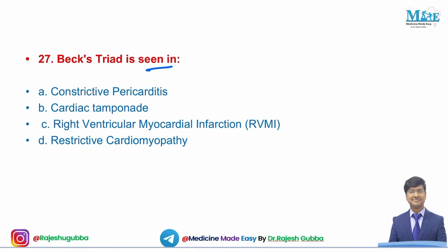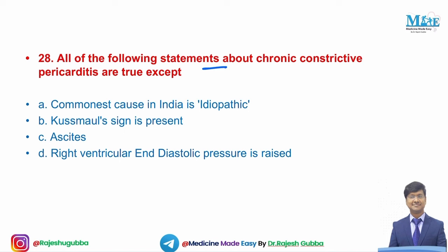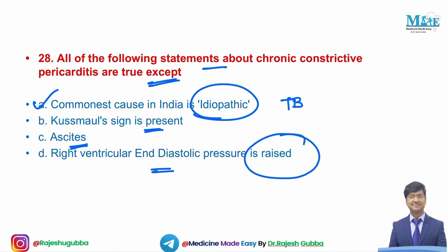Beck's triad — raised JVP, muffled heart sounds, and hypotension — is seen in cardiac tamponade. Next question: all statements about chronic constrictive pericarditis are true except — commonest cause in India is idiopathic, Kussmaul's sign is present, ascites is present, or RV end-diastolic pressure is raised. The incorrect statement is that the commonest cause in India is idiopathic; it is actually tuberculosis. Kussmaul's sign, ascites, and raised RV end-diastolic pressure are all true features. Kussmaul's sign is also seen in restrictive cardiomyopathy and any right heart failure.